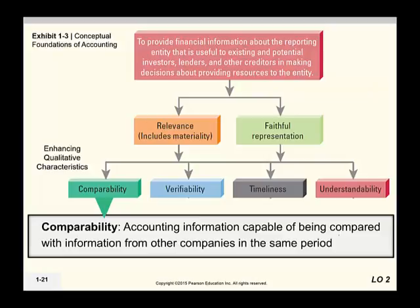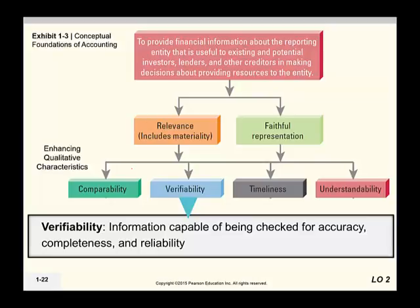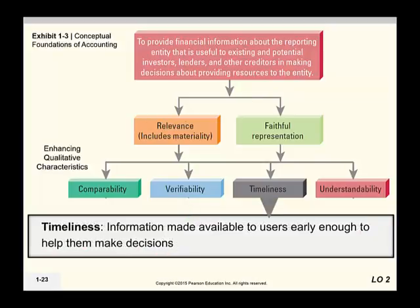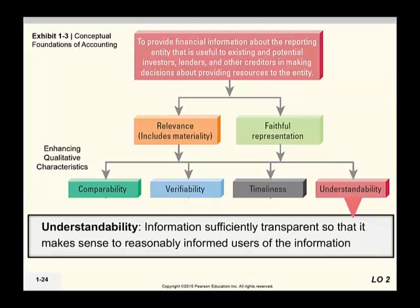Comparability is where you can compare companies in the same period — for example, comparing Home Depot and Lowe's should be possible because their financial statements should be presented in the same fashion. Verifiability means you should be able to check the information for accuracy, completeness, and reliability — that it's free from error, all entries are recorded, and what the information tells you is true. Timeliness means the information is not useful unless it's presented in a timely fashion and available prior to making a decision. Understandability means the information has to be transparent so you can make a reasonably informed decision.